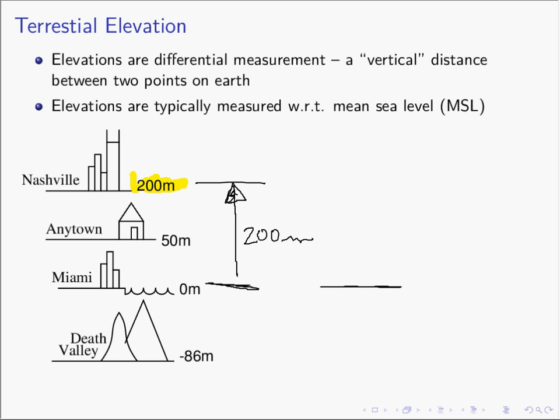Likewise, if you were to measure the elevation of Anytown, USA, in this example it is located 50 meters higher than mean sea level — that is, the vertical distance from the ocean's mean sea level to Anytown is 50 meters. And if you were to progress from the ocean to Death Valley in California, you would have to go down 86 meters, so we say the elevation of Death Valley is negative 86 meters above mean sea level, since it is actually below sea level.